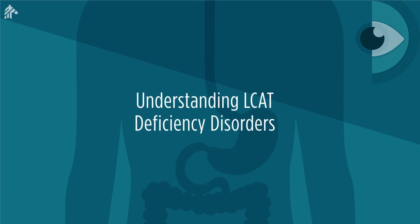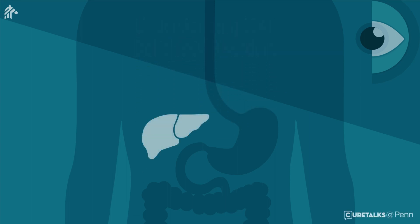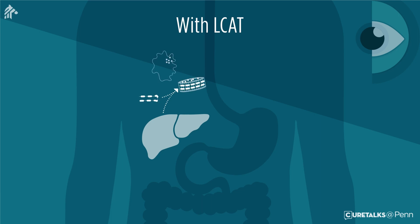Lecithin Cholesterol Acyltransferase, or L-Cat, is a protein produced by the liver and secreted into circulation. L-Cat performs a very important function: it traps cholesterol within complex molecules called lipoproteins and takes them to the liver for elimination. L-Cat removes cholesterol from blood and tissues and attaches it to lipoproteins, leading to the formation of high-density lipoprotein, HDL.